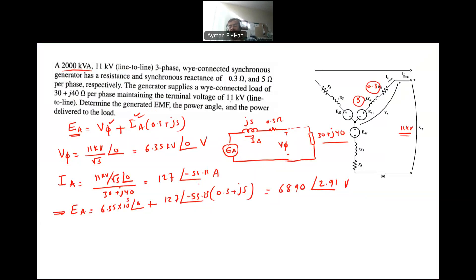If I want to find EA for the line-to-line, multiply this by root 3. What is the power angle, or sometimes called the torque angle? It's actually the angle between EA and V phase. So it's already given here, which is the 2.91.